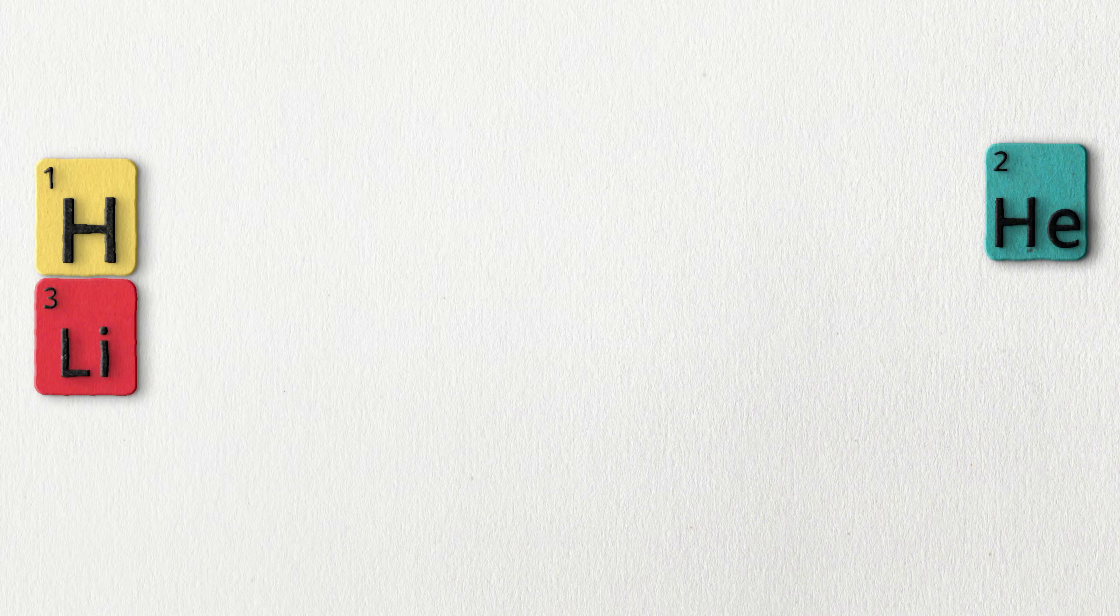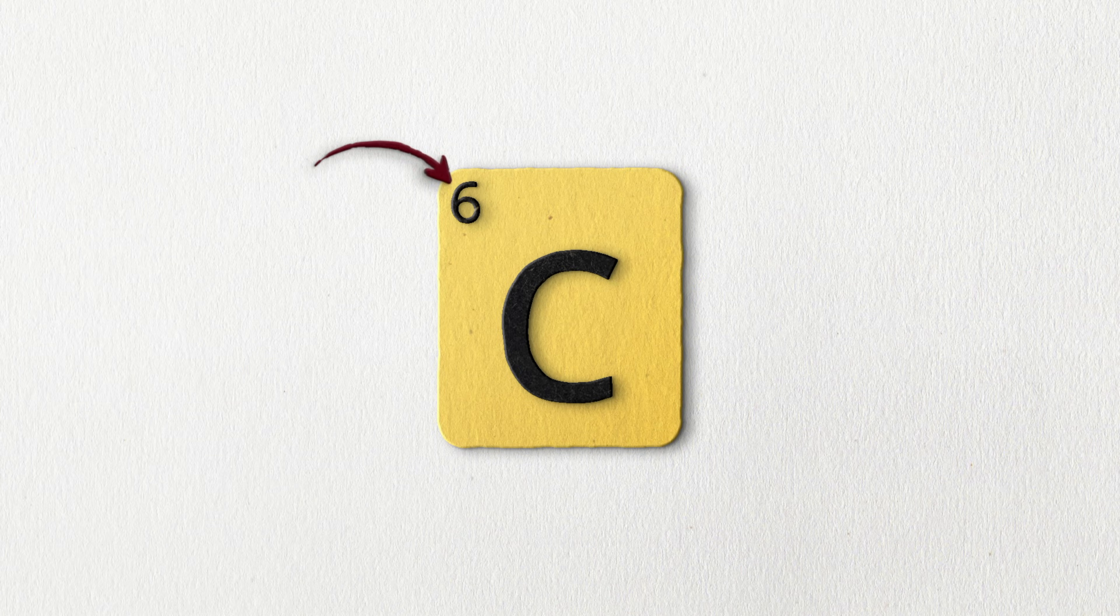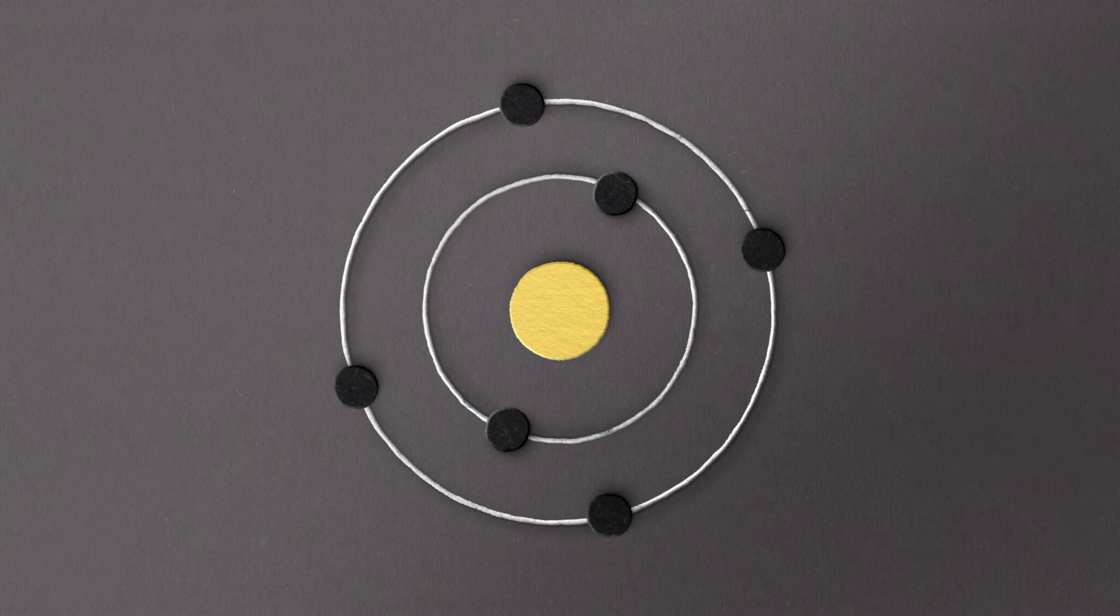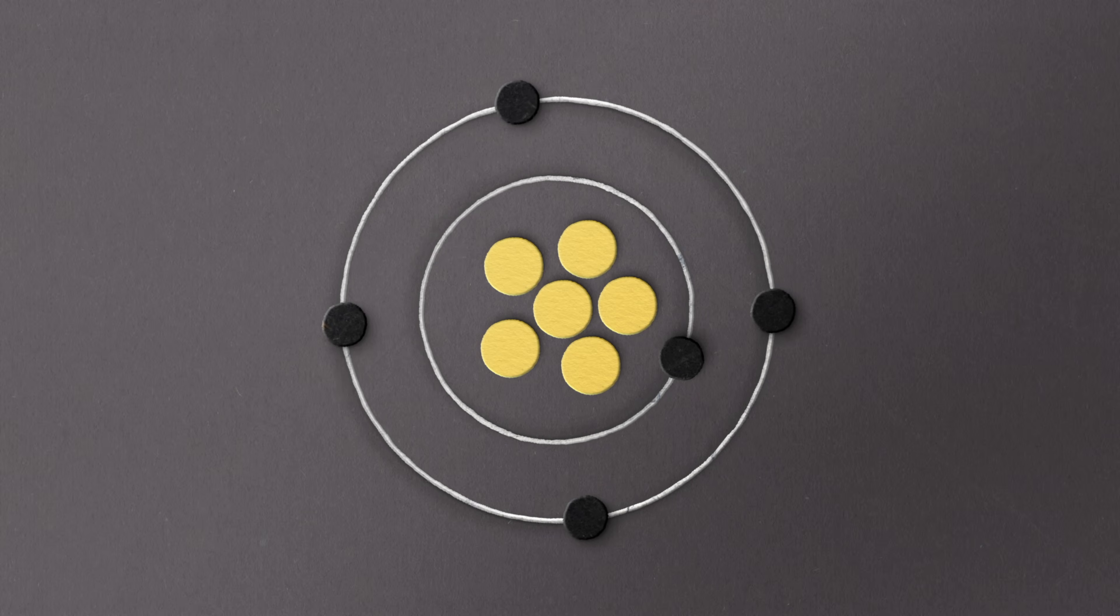Remember that carbon is element number 6 on the periodic table. That atomic number 6 means that each atom of carbon has 6 protons in its nucleus. And that means that every normal or neutral carbon atom has 6 electrons as well.